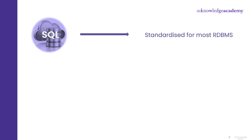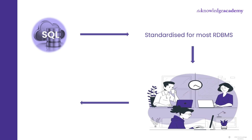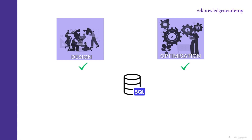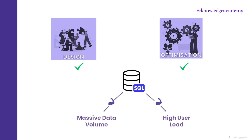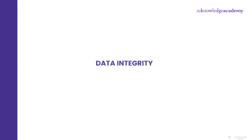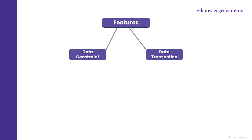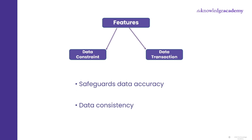The next advantage is portability. SQL being standardized makes it compatible with most relational database management systems, which means you can seamlessly switch between different systems without rewriting your queries. Another important advantage is scalability — SQL, with the right design and optimization techniques, can handle massive data volumes and high user loads, ensuring smooth sailing even as demands soar. Data integrity is also SQL's top priority, offering features like constraints and data transactions to safeguard your data's accuracy and consistency over time.